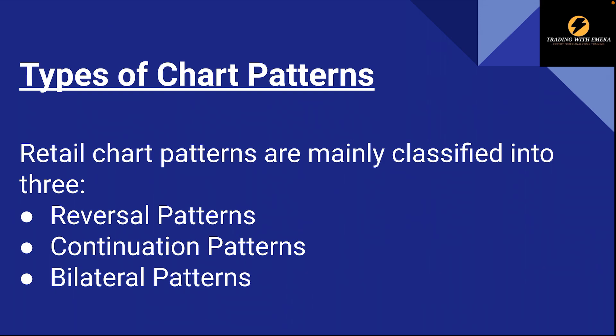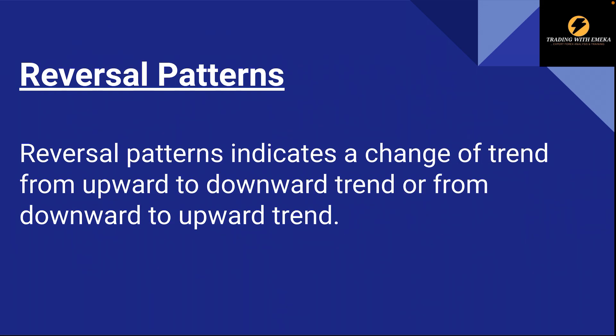Retail chart patterns are classified into three major groups. Number one: reversal patterns. Number two: continuation patterns. Number three: bilateral patterns. Reversal patterns are patterns that indicate a change of trend — either from an upward trend to a downward trend or from a downward trend to an upward trend. When we spot a reversal pattern, that informs the retail trader that price is about to change to the opposite trend.